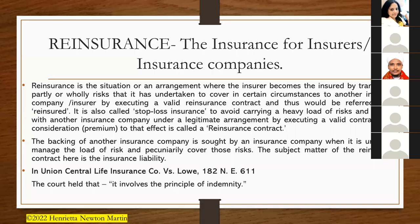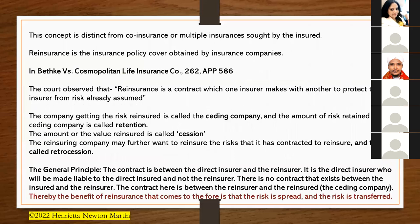The backing of another insurance company is sought when an insurer is unable to manage the load of risk and financially cover those risks. The subject matter of the re-insurance contract is insurance liability. In Union Central Life Insurance Company v. Low, the court held that re-insurance involves the principle of indemnity — to make good the loss. This concept is distinct from co-insurance or multiple insurances sought by the insured. In Betke v. Cosmopolitan Life Insurance Company, re-insurance was described as the insurance policy cover obtained by insurance companies.